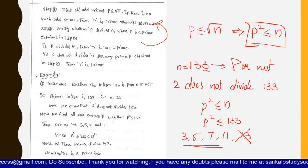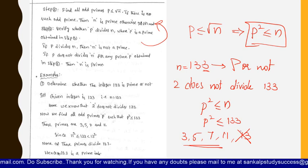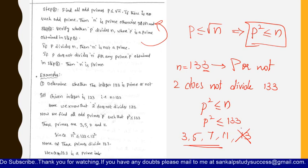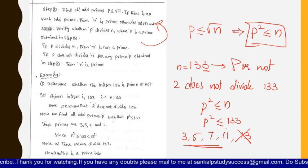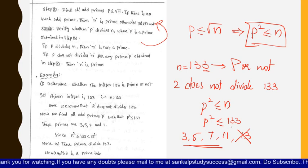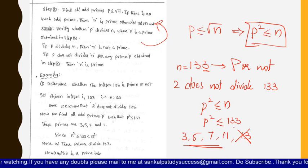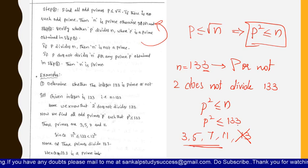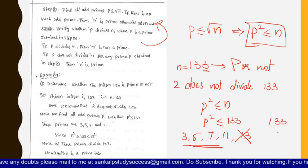Now we check whether these odd primes divide 133. Does 3 divide 133? No — the sum of digits is 7, so 3 does not divide it. Does 5 divide 133? No. Does 7 divide 133? No. Does 11 divide 133? No. Since none of the odd primes less than or equal to 133 divide 133, we conclude that 133 is a prime number.